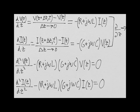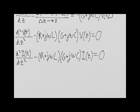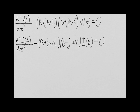We can simplify these two equations by defining gamma squared as the term R plus j omega L times G plus j omega C.